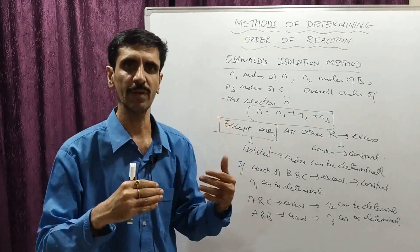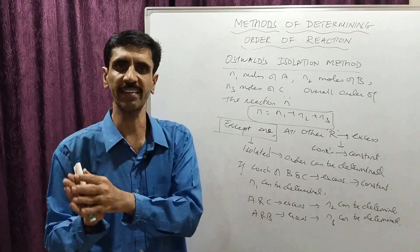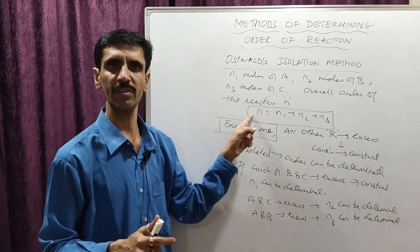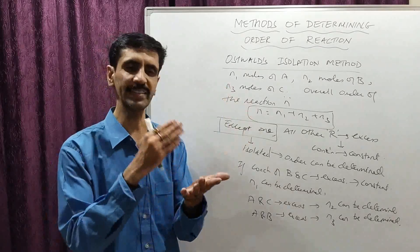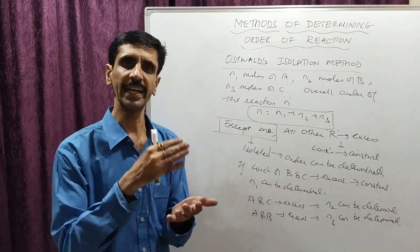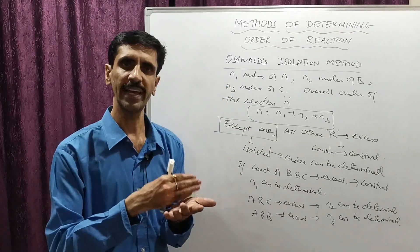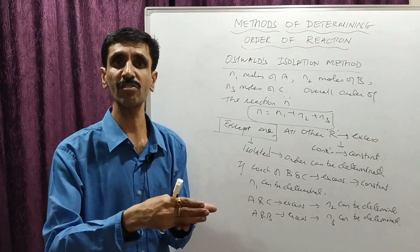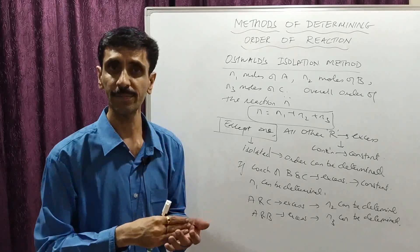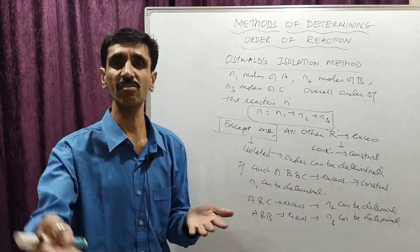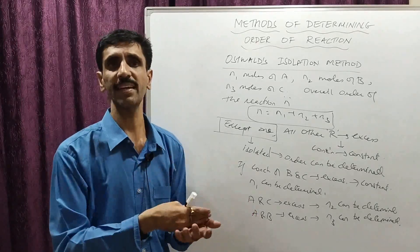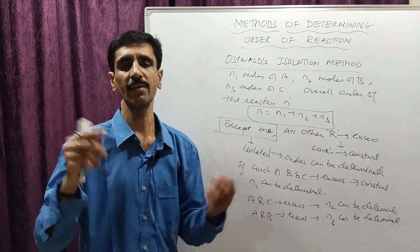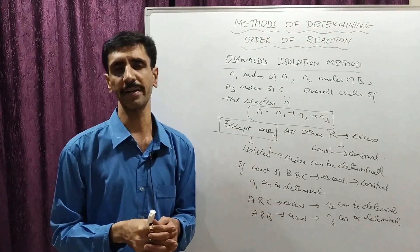You keep doing this step by step to get the individual orders of reaction. So: B and C constant gives n1; A and C constant gives n2; A and B constant gives n3. Then n1 plus n2 plus n3 gives the overall order of the reaction.